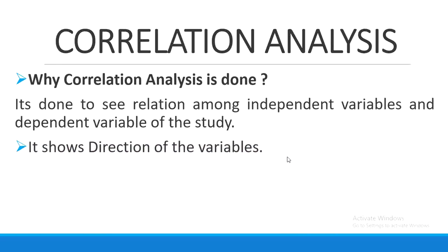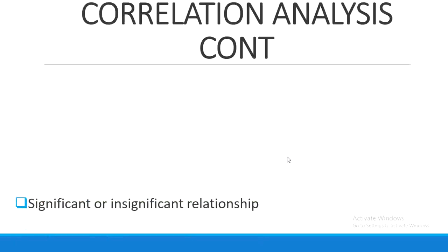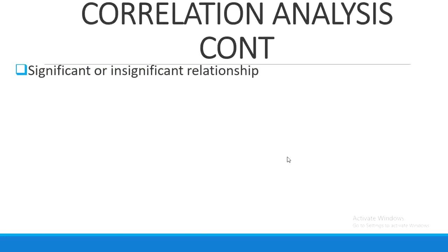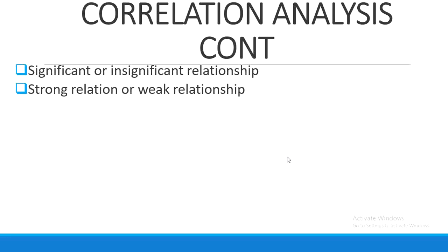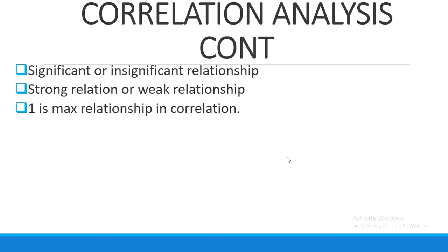Correlation also shows the direction of our variables. It tells us about significant or insignificant relationships, and whether the variable relationship is strong or weak. The maximum value in correlation is one — if your correlation comes out more than one then your results are invalid. Your maximum correlation can be 0.98 or 0.88, but it cannot cross the limit of one.